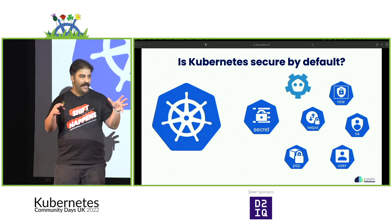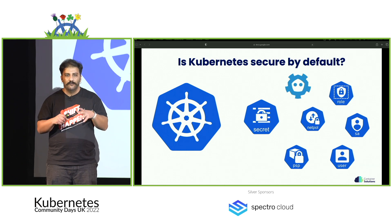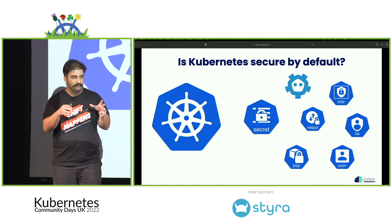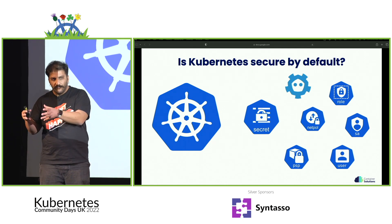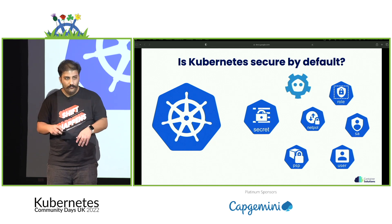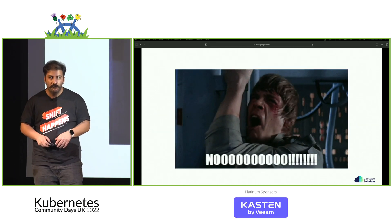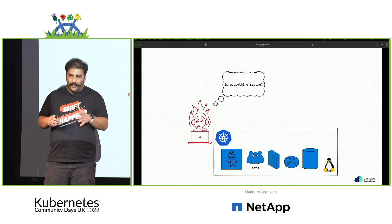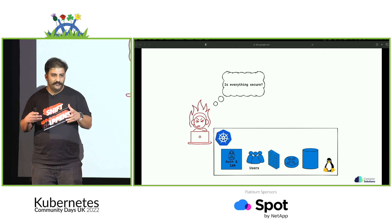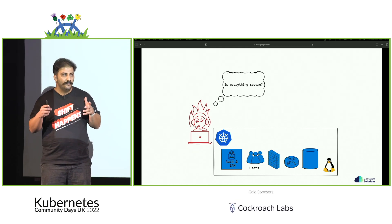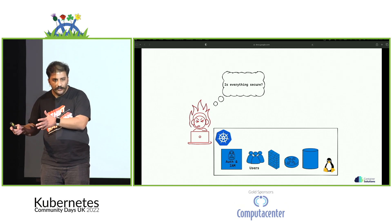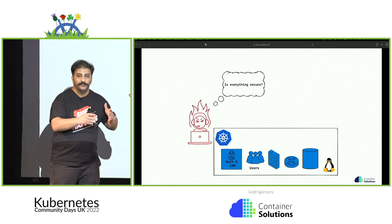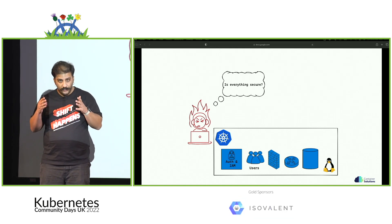The answer is no, because when you think about it, you have to manage roles, accounts, service accounts, role bindings, network policies, and of course secrets and encrypting the etcd as well. So the answer is no. And we have to ask ourselves the same question over and over again — is everything secure? From the kernel to our applications, the firewall, network configurations, user accounts, everything, and of course secrets as well.